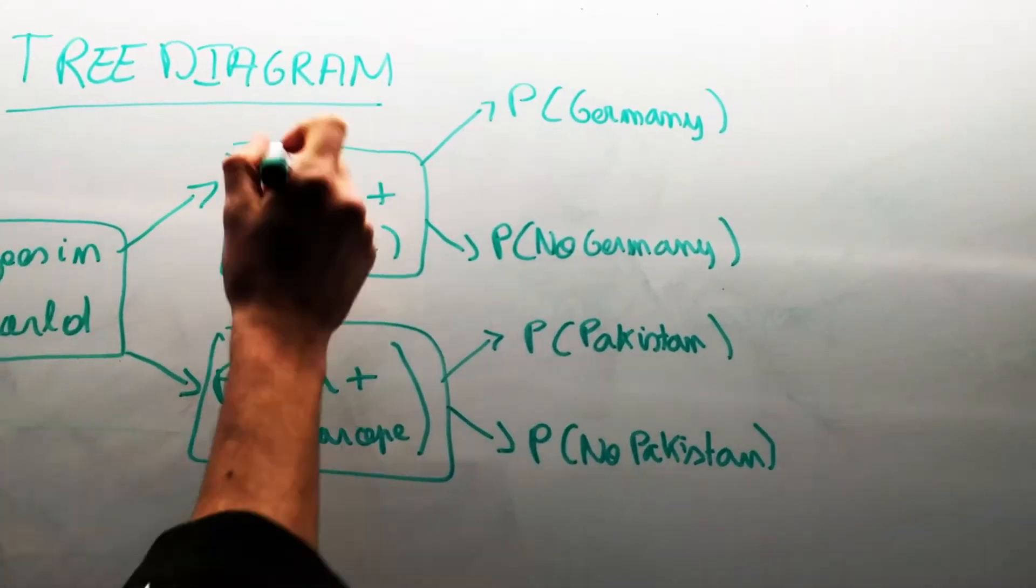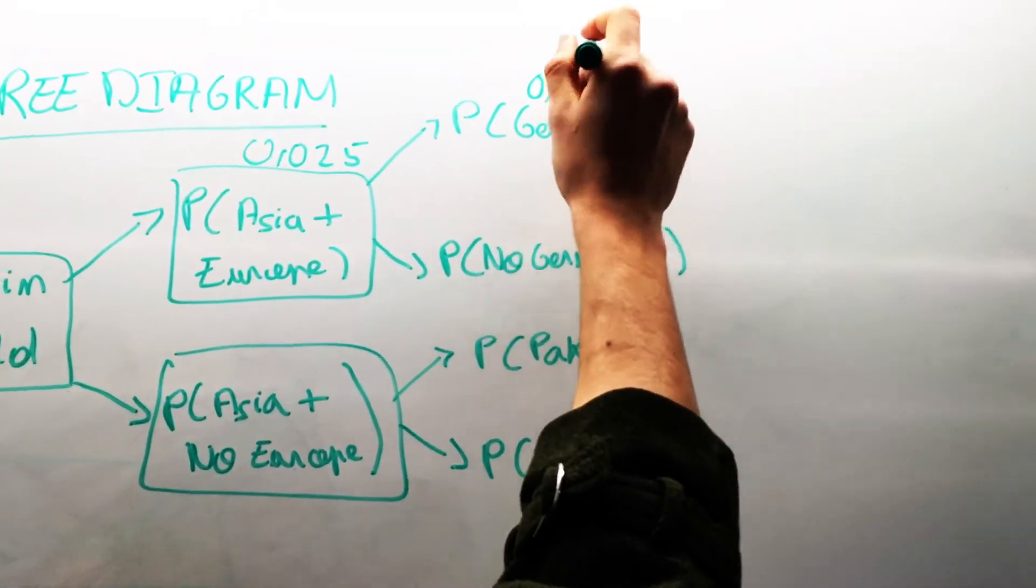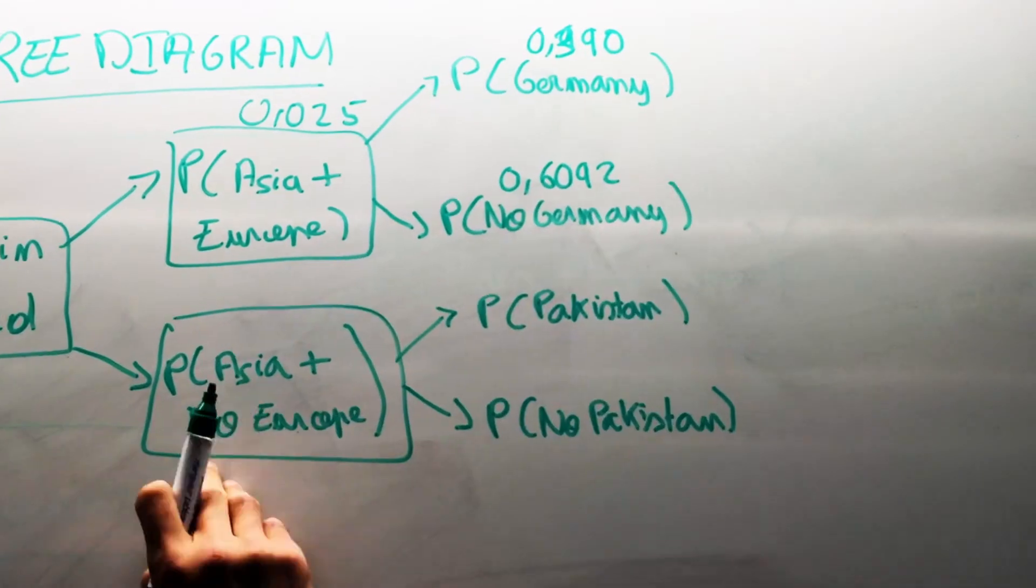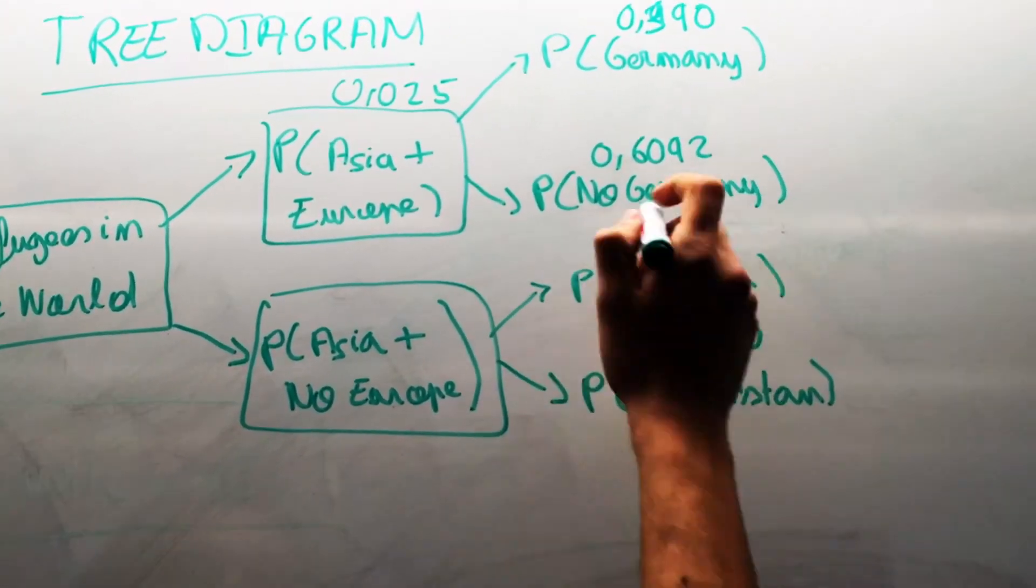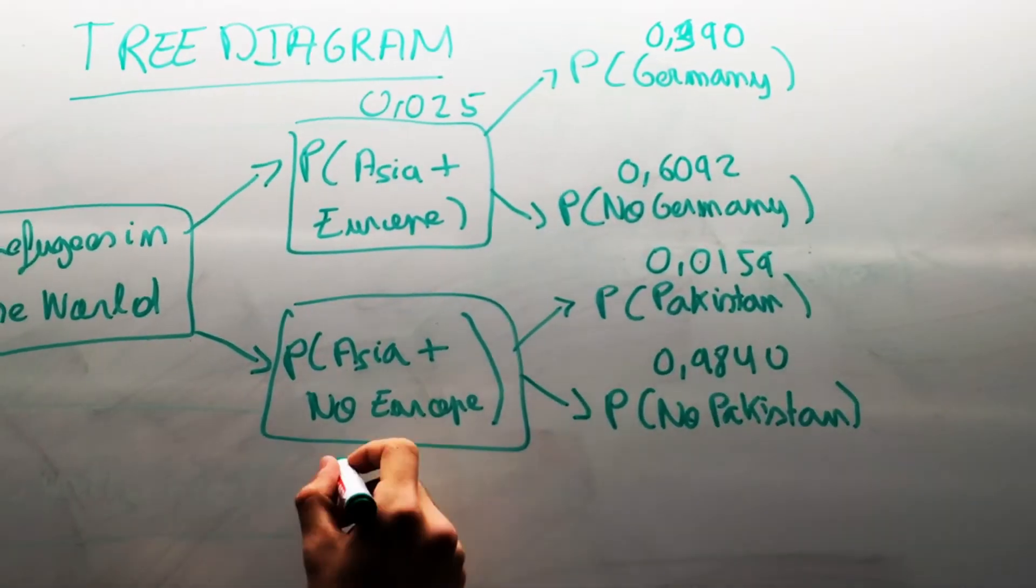From this information of the data of refugees in the world, we have estimated the probability of the localization of the refugees in Europe and Asia. And from this, we have estimated the probability of refugees in Germany or no refugees in Germany.